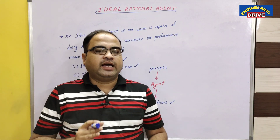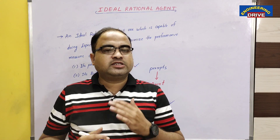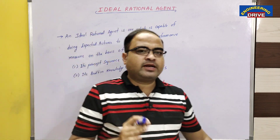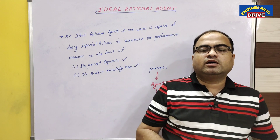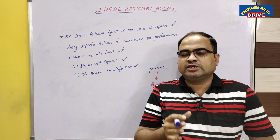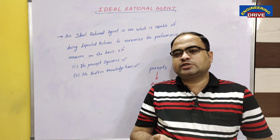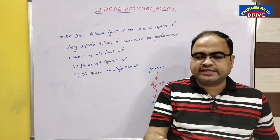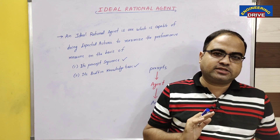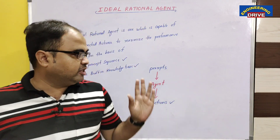In simple terminology, an ideal rational agent is one which always does the right thing and never does the wrong thing — we call that an ideal rational agent. Sometimes agents can be successful or unsuccessful. Successful agents are those which generate actions based on correct percepts. Unsuccessful agents will also generate actions, but their actions will not always be the correct or expected actions. This is how our ideal rational agent works based on these two terminologies.